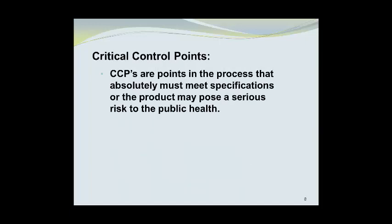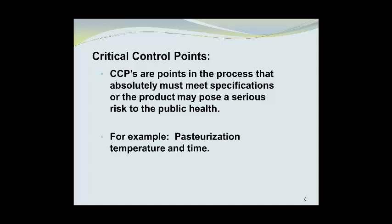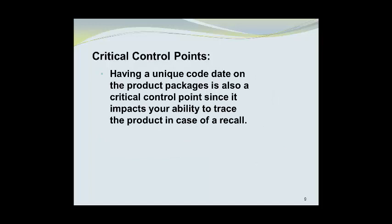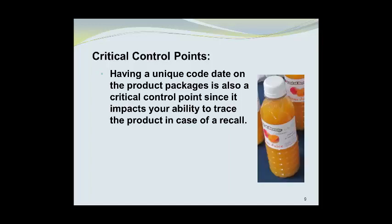Critical control points, or CCPs, are points in the process that absolutely must meet specifications or the product may pose a serious risk to public health. For example, pasteurization requires a specific temperature for a required time period in order to be effective. Having a unique code date on product packages is also a critical control point, since it impacts your ability to trace the product in case of a recall. Here we see one of the beverages manufactured at the St. Kitts workshop with a stamp showing a code date that is a best before date.